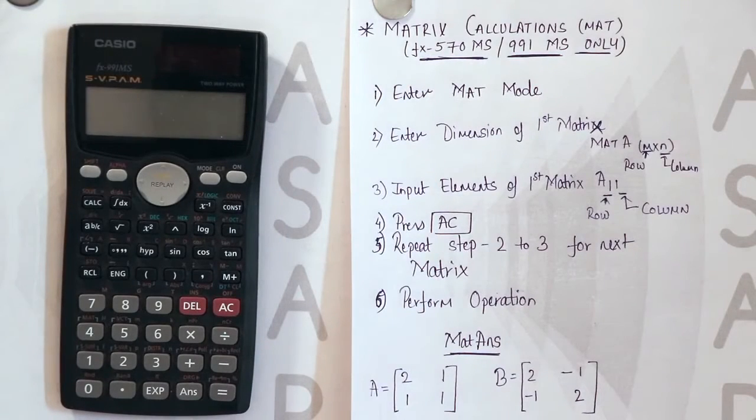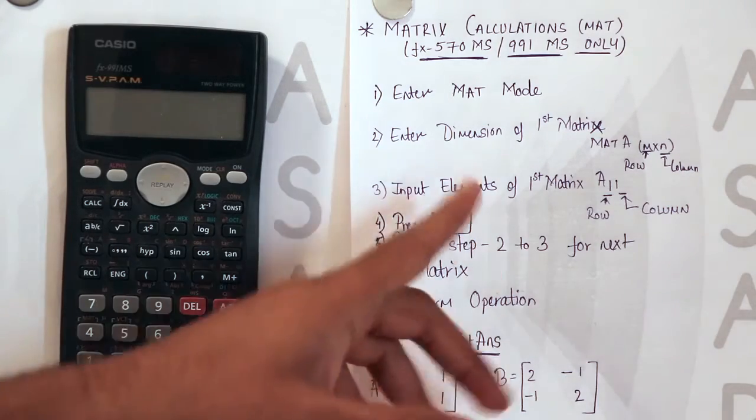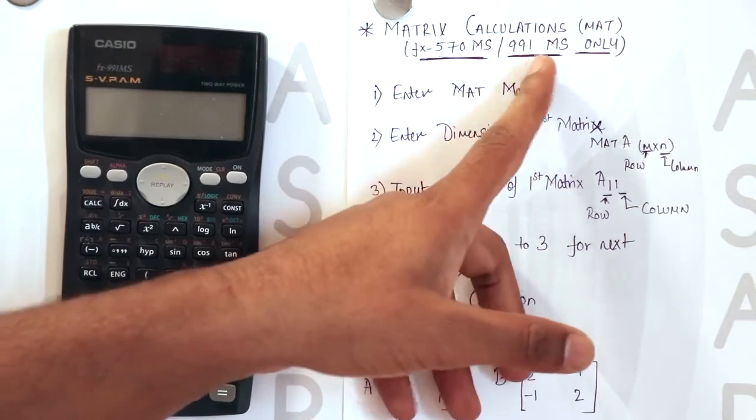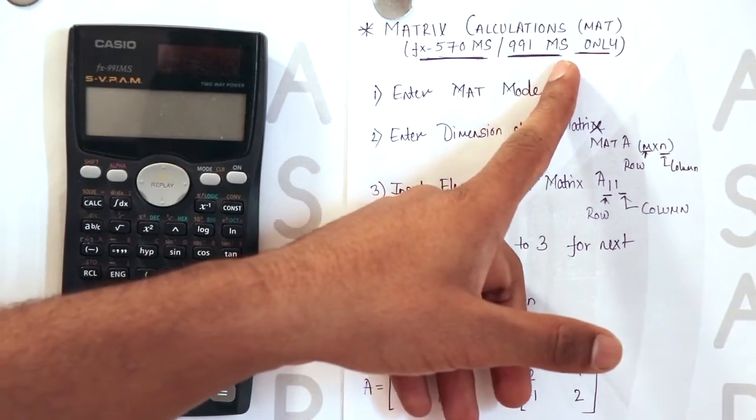Hello everyone, today we are going to see the videos on matrix calculations. An important point to note is we can only have these calculations on Casio 570ms and 991ms versions.